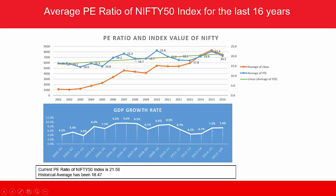You will also see a trend line. This trend line is the trend of the PE ratio of the index — it is not the trend line of the closing value of the index. What you see from the trend line is that as time progressed from 2001 to 2016, the PE ratio has increased on average — it was 16.3 in 2001 and currently it is 20.1.